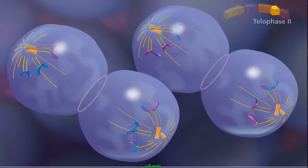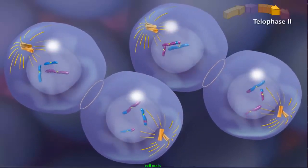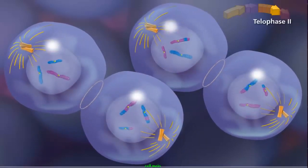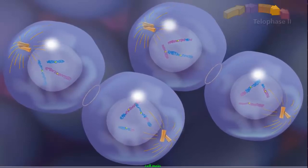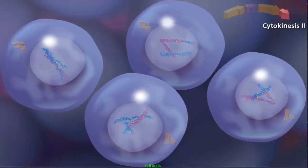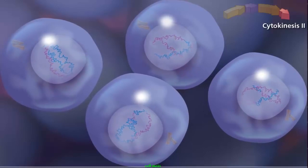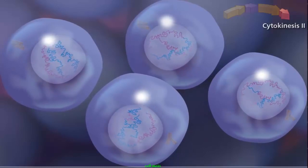The entire process ends with telophase II, as the chromosomes decondense and the nuclear envelope reforms. Cytokinesis occurs and cleavage furrows separate the two daughter cells into four haploid daughter cells.